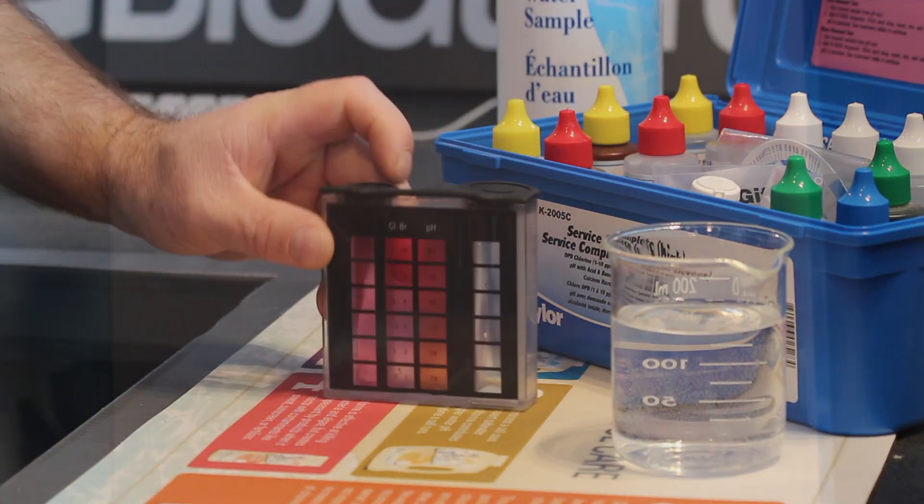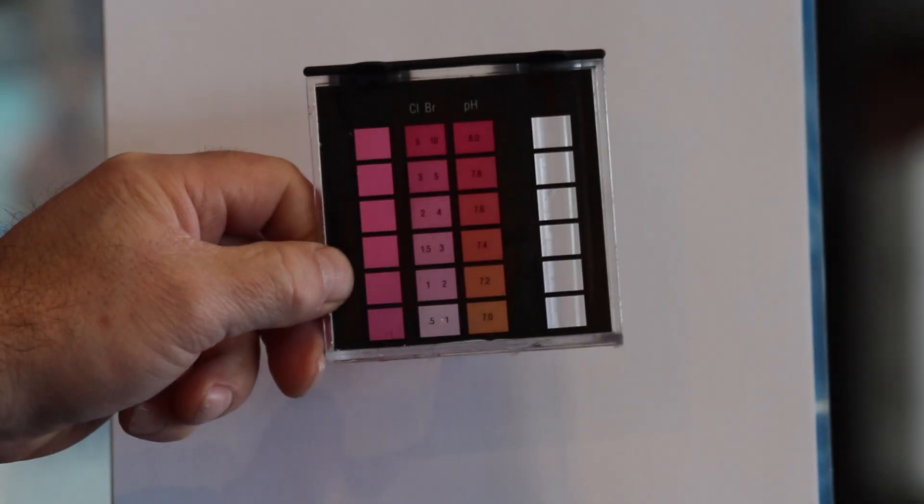Cap, invert to mix, then compare to the comparator block, then multiply by 2.